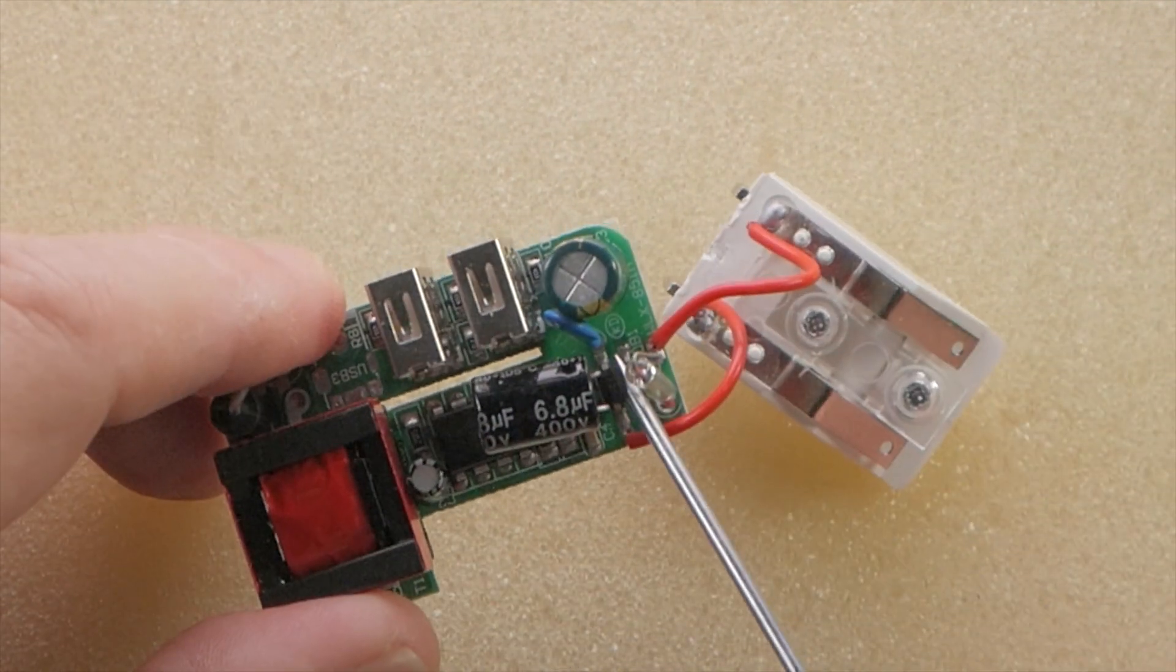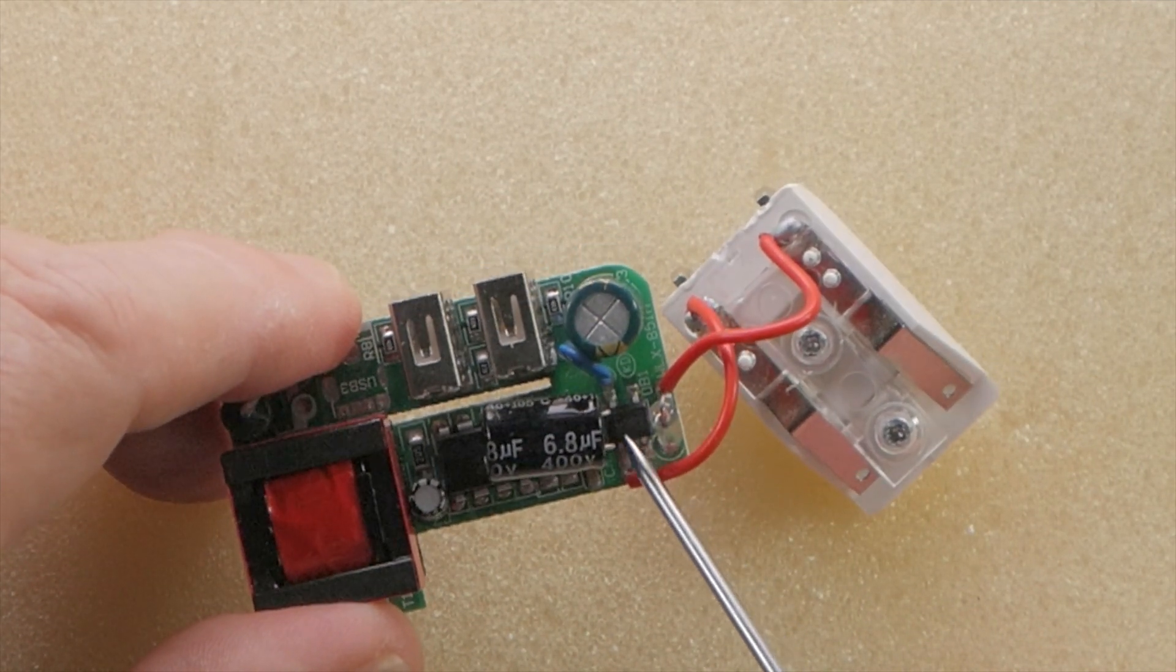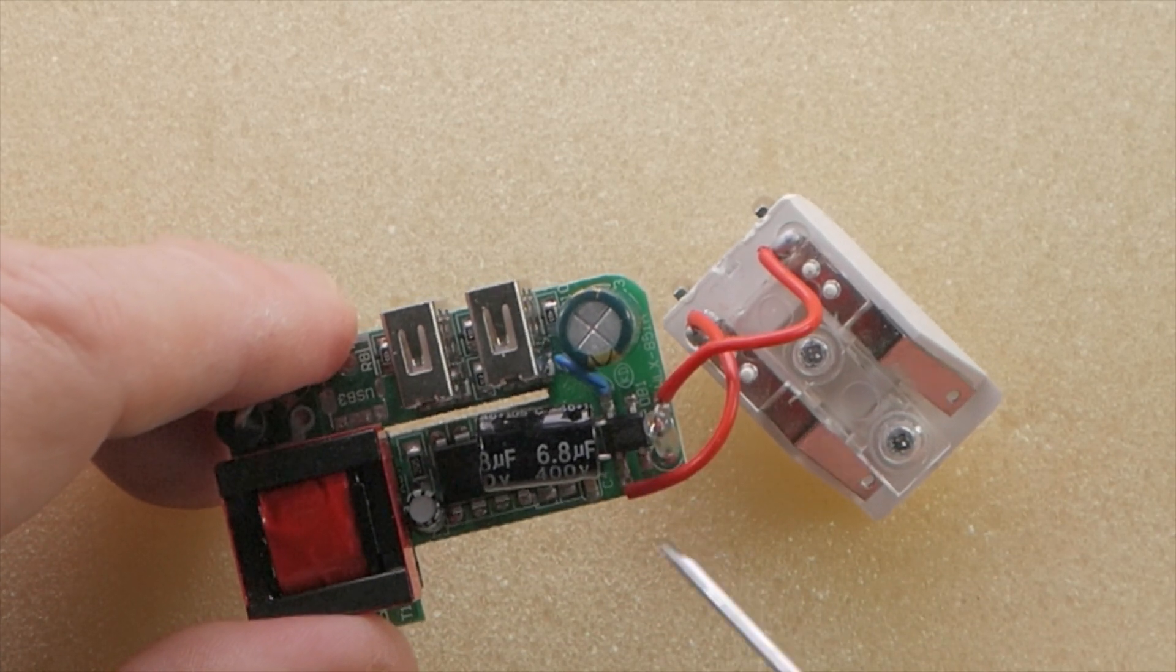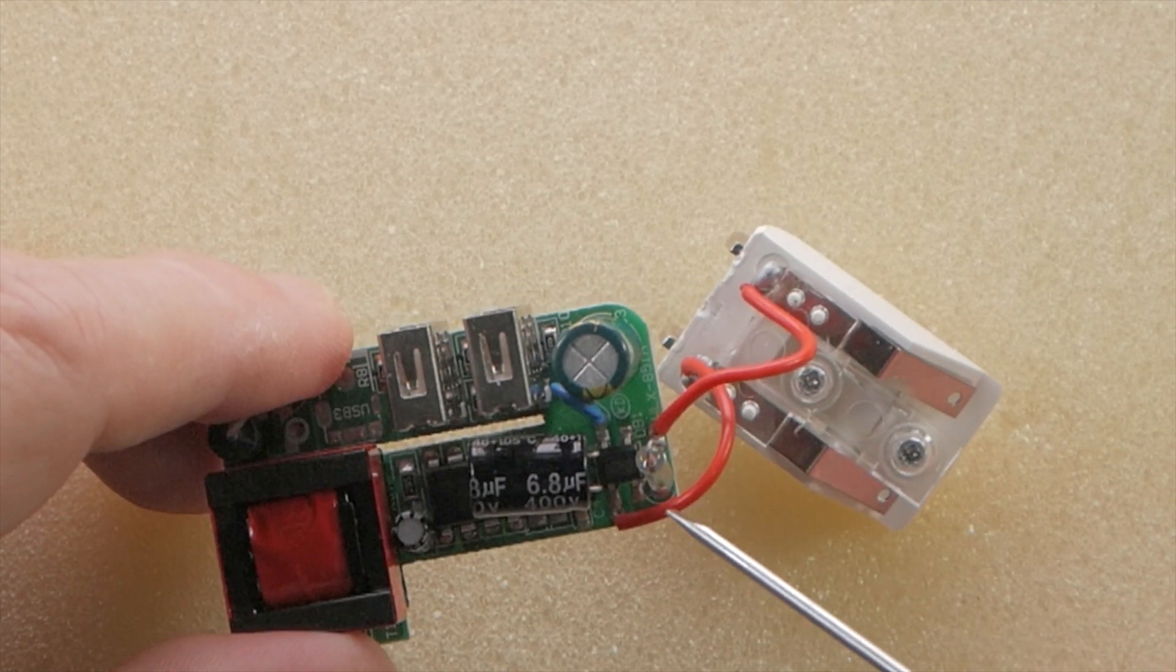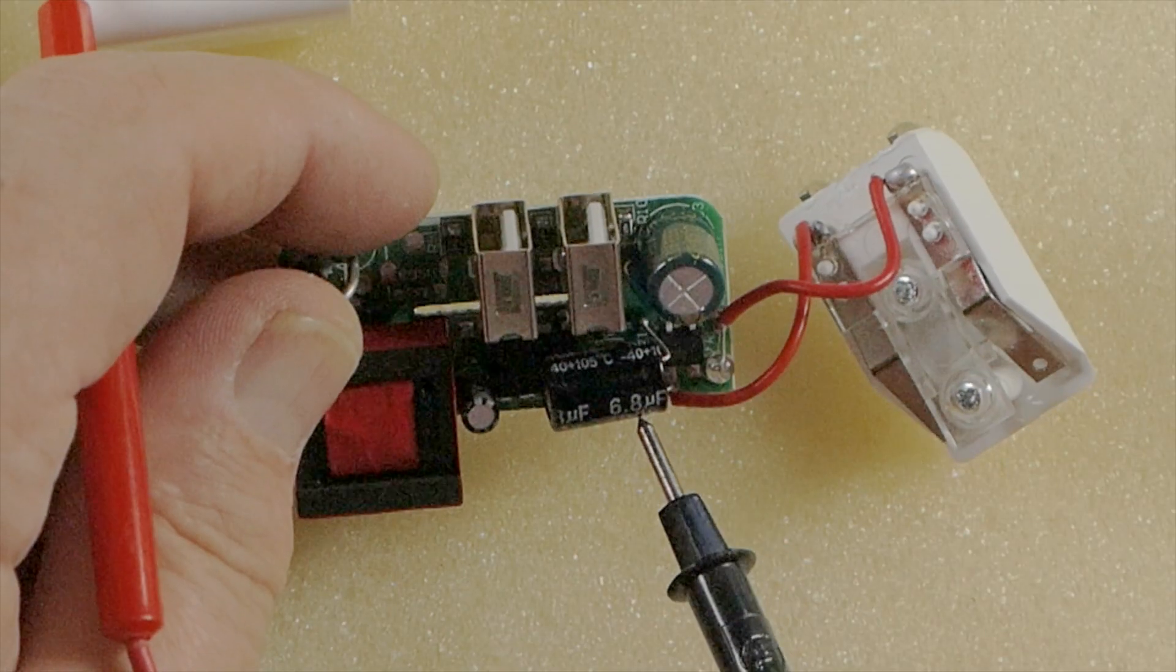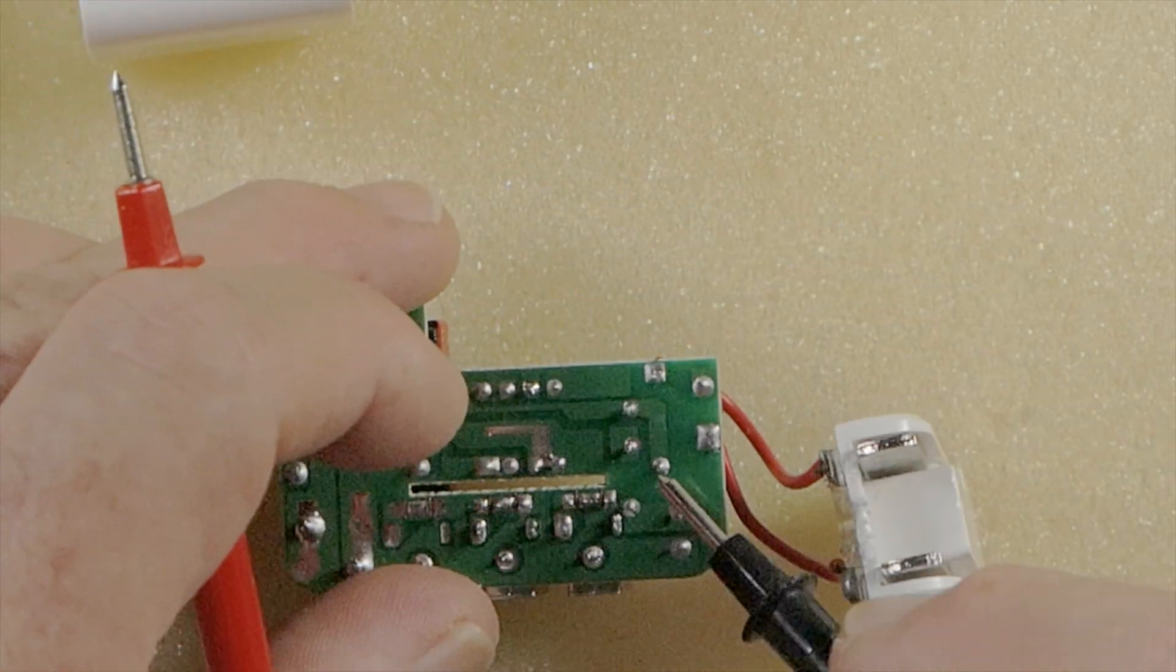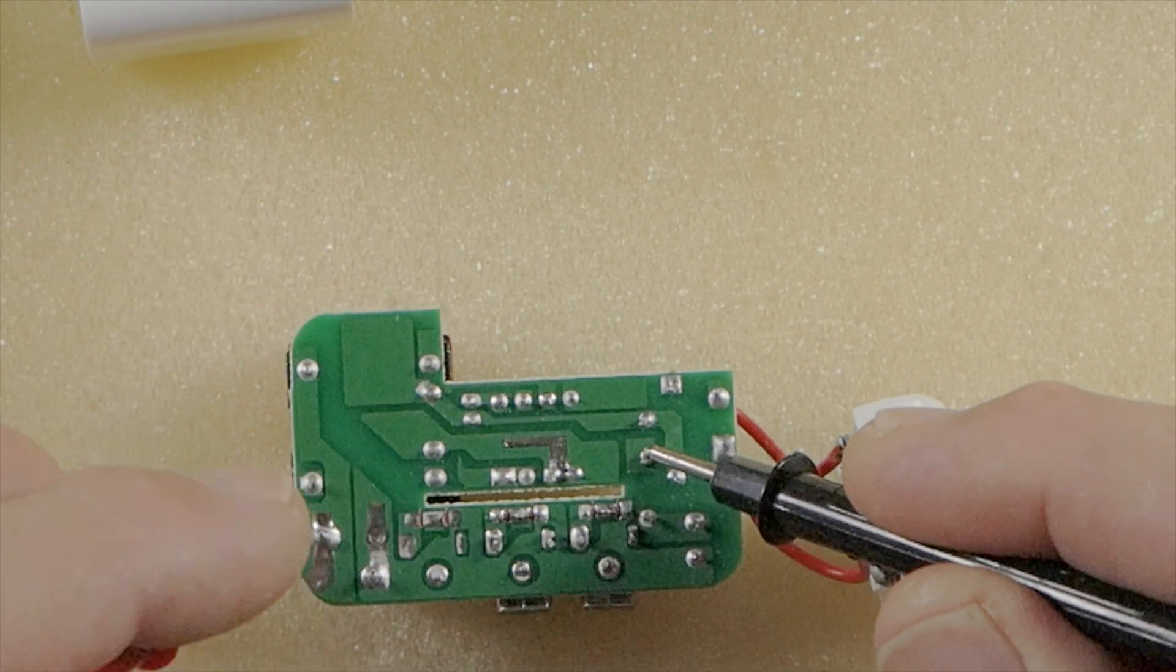This little four pin surface mount device, this rectangular one right here, that is a full wave bridge rectifier. That is essentially four diodes arranged in a configuration where the AC comes in on these two red wires and the output is DC voltage. It's filtered by the 6.8 microfarad 400 volt capacitor, which the output of that is on this pin right here, it goes over to this winding right here that's the primary winding of this transformer, this big red transformer.